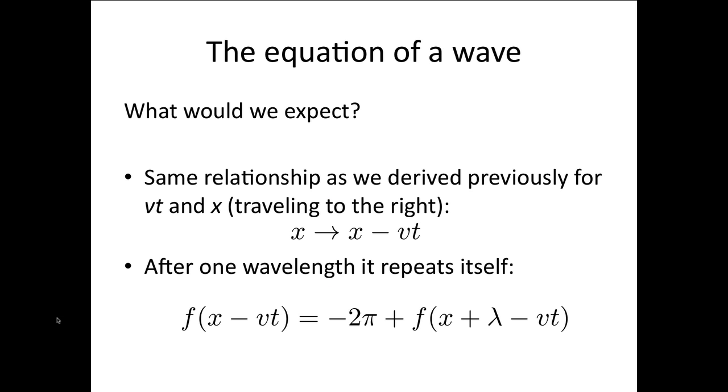So what we're going to do now is derive an equation to describe the wave. Let's think about what we would expect for this wave equation. Well, first of all, we'd expect the same relationship as we derived previously for vt and x. So that if it's traveling to the right, then x becomes x minus vt.